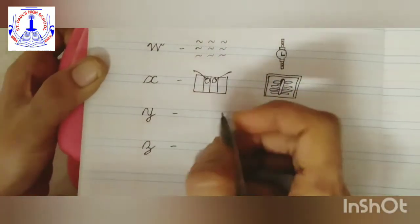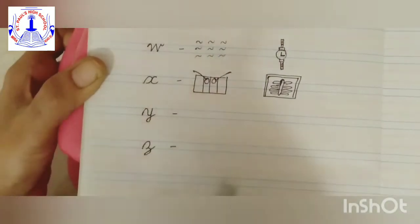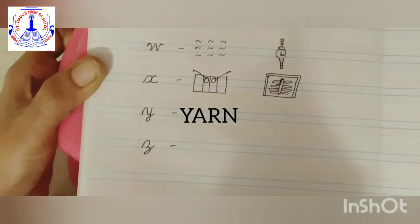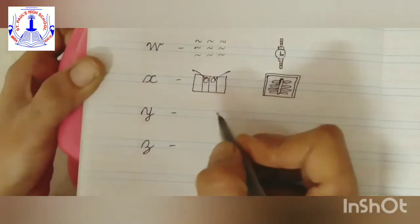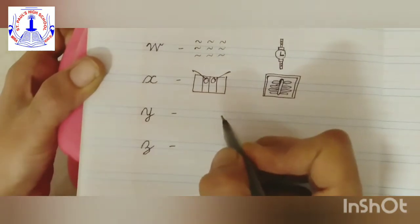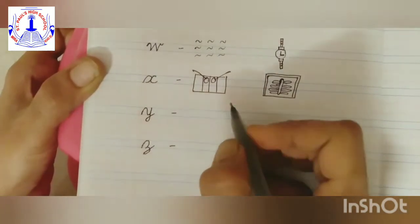Now Y. Cursive Y. Y says Y. Y-ya, yarn. Yes, we make sweater muffler from yarn, isn't it, children.